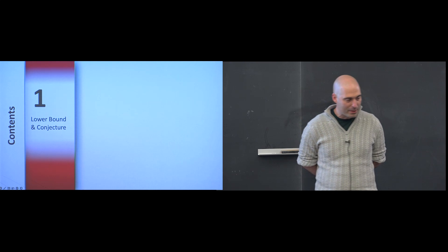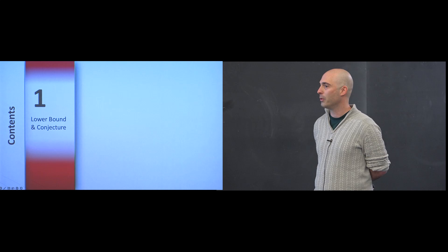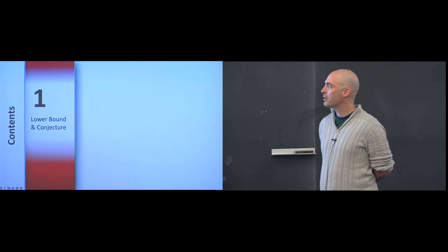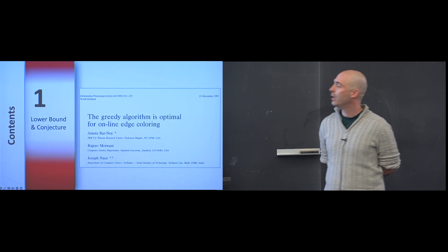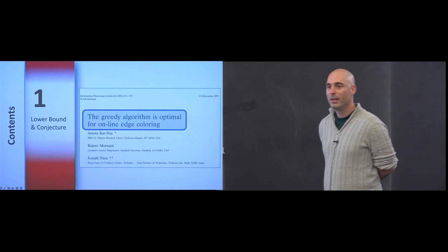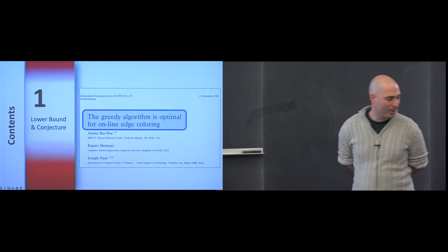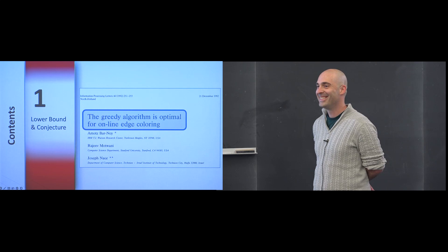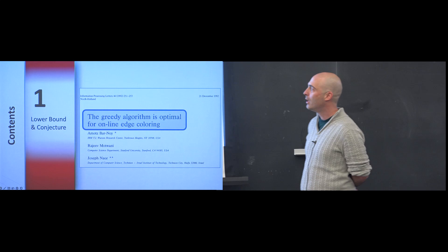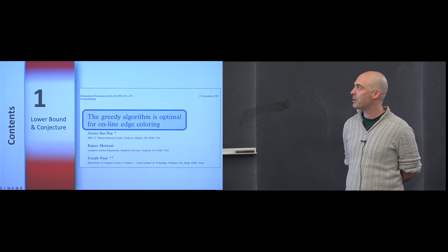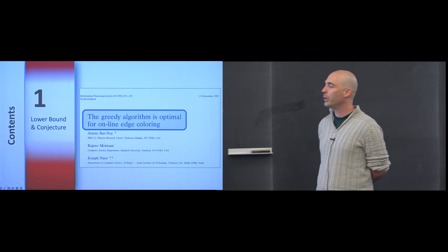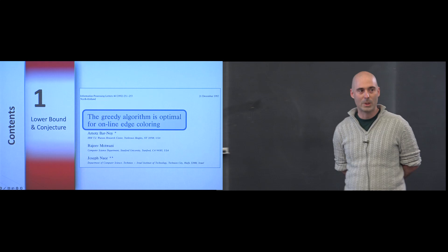Let's start with a lower bound. The hope is to do something more interesting than the not-particularly-interesting greedy algorithm. Unfortunately, the title of a note from a paper of Barnoy-Motwani-Noor three decades ago says this is not a great research question. The title of their paper is 'The Greedy Algorithm is Optimal for Online Edge Coloring.' So I'm not even ten minutes into this talk and I've already told you there's no point. Let me unpack this lower bound — it's a fairly reasonable undergraduate exercise, but going through it will be enlightening as to what we could hope to do beyond what the title seems to say, which is nothing.